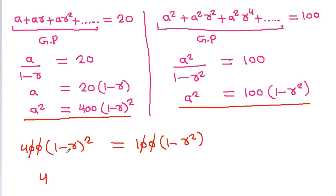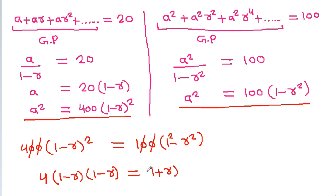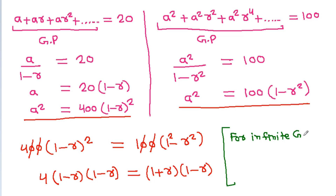Now, 1 minus r squared factors as 1 minus r times 1 plus r. For an infinite GP, r is less than 1 and greater than 0, so r cannot equal 1. Therefore, we can cancel the common factor of 1 minus r from both sides.